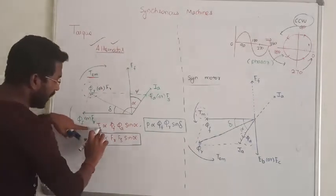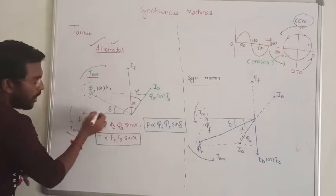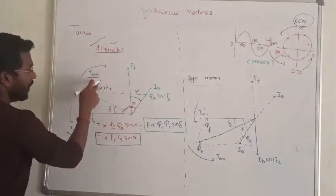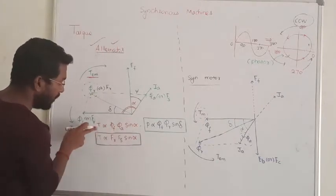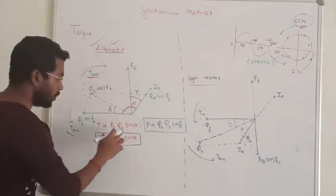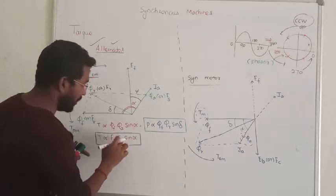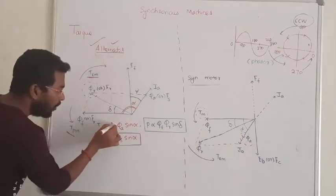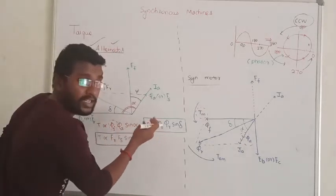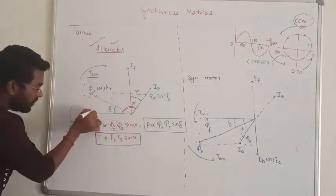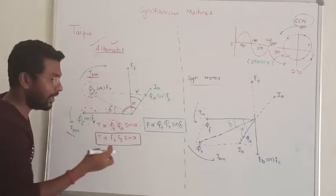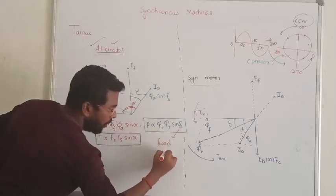Next, in the torque: the difference between field MMF and armature MMF is the phase difference, which is the angle alpha. Either way, the torque is directly proportional to sin of alpha. At alpha equal to 90 degrees, your torque will become maximum. So torque is directly proportional to sin alpha — this is called the power angle. For the numerical torque, torque is directly proportional to field MMF flux multiplied by armature flux multiplied by sin alpha. Power depends on field MMF flux and the resultant flux. This is your field MMF flux, and this is your resultant flux. The torque angle is called the load angle or power angle.